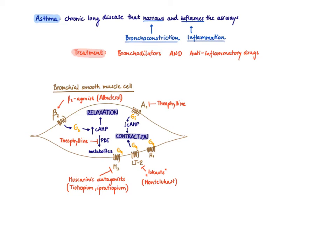We can also use antagonists to the leukotriene receptors — these are the '-lukast' drugs, like montelukast or zafirlukast; they all end in '-lukast'. Another option is theophylline. Theophylline is an antagonist at the adenosine receptor, which is Gi-coupled and mediates bronchial smooth muscle contraction. Remember that theophylline is not only an adenosine antagonist — it's also a PDE inhibitor, so it prevents the degradation of cyclic AMP, and therefore increased levels of cyclic AMP also mediate smooth muscle relaxation.